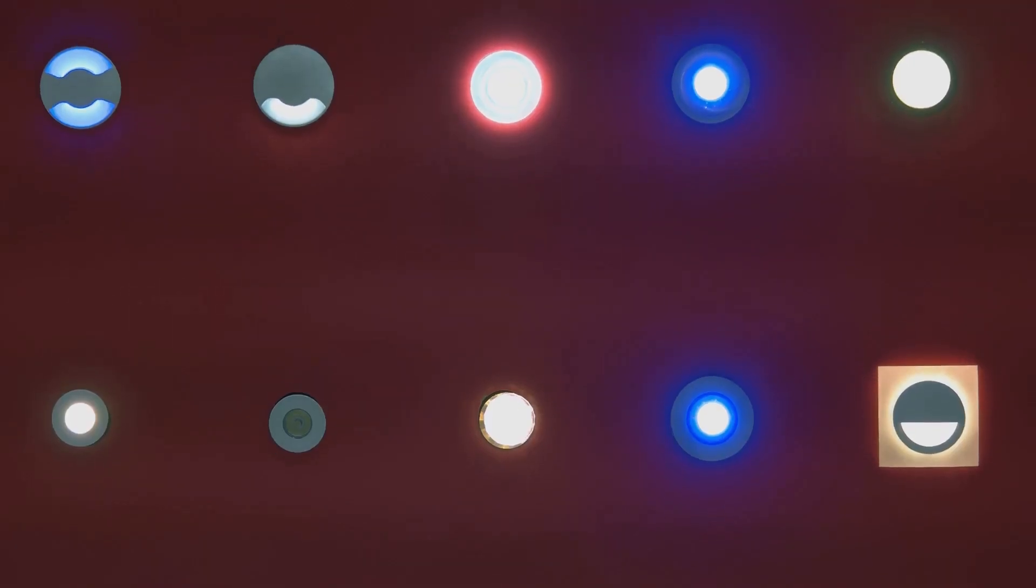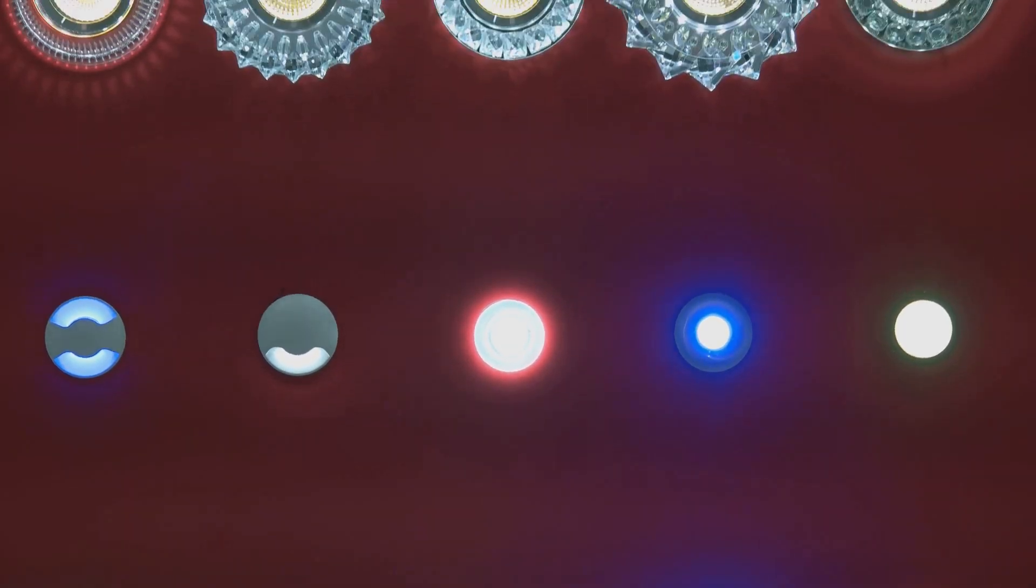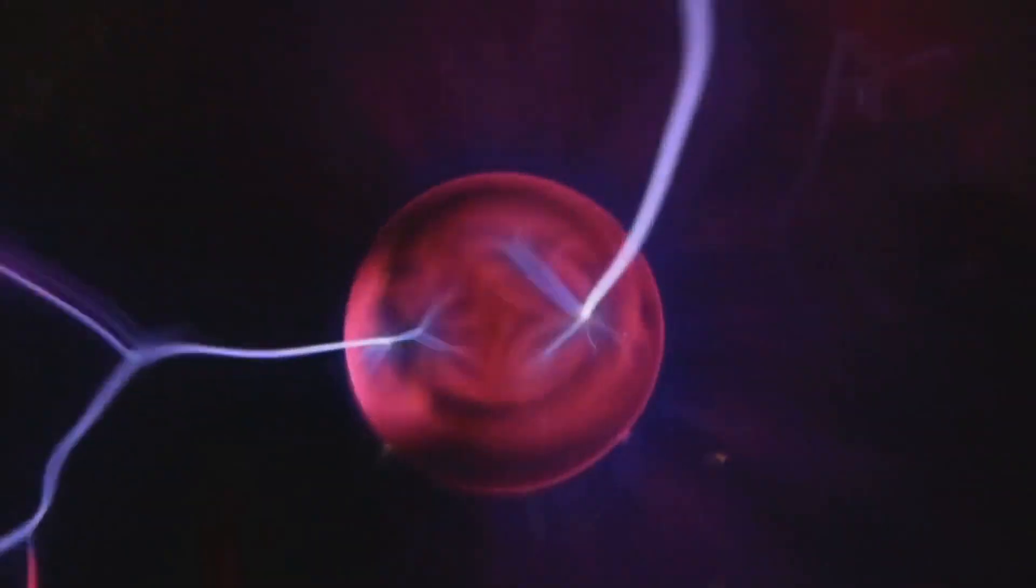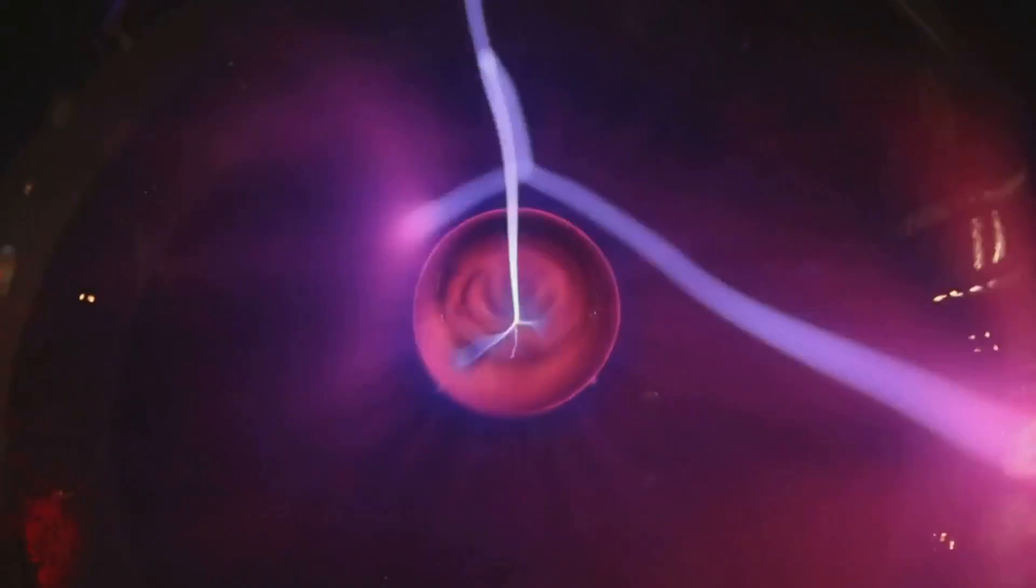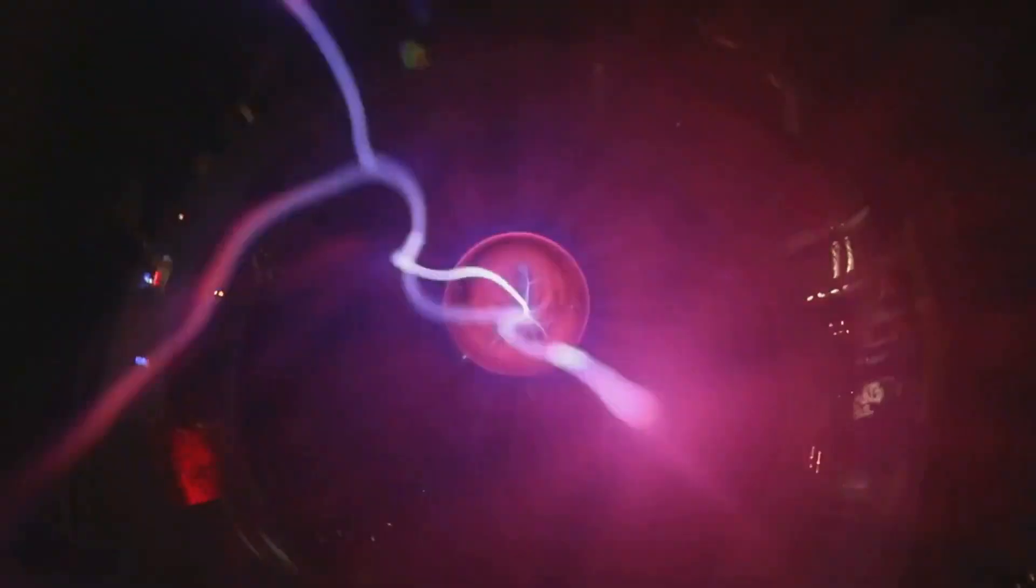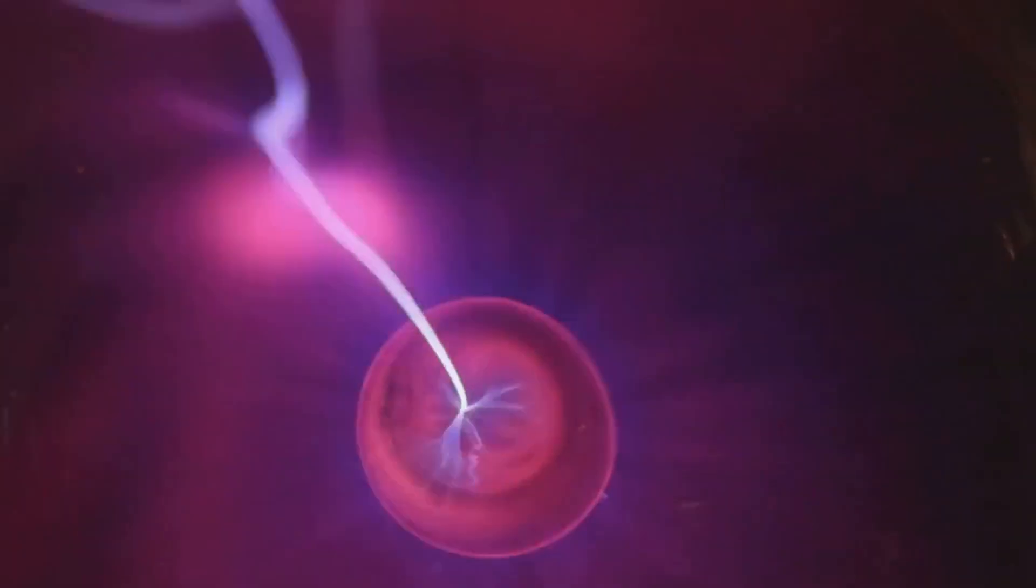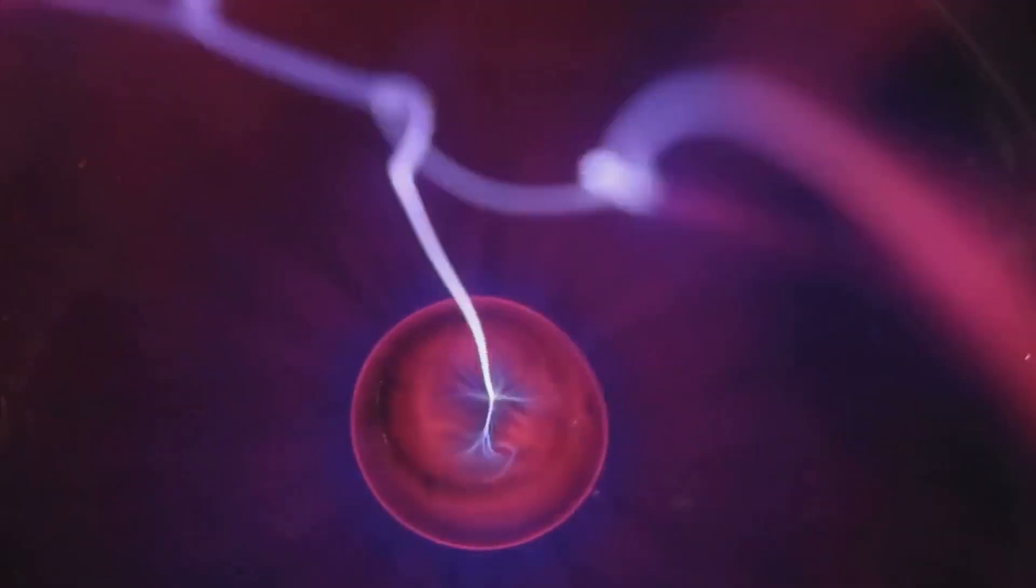Zener diodes are voltage regulators. Another important type of diode is the Zener diode. Unlike regular diodes, which are primarily used for their unidirectional current flow, Zener diodes are specifically designed to operate in the reverse breakdown region.